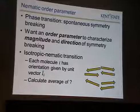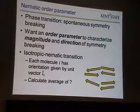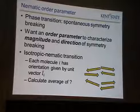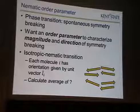In the case of a magnetic phase transition, you have an order parameter which is the net magnetization, representing the magnitude and direction of the symmetry breaking. So now we want to construct something analogous to that for nematic liquid crystals. What kind of order parameter would represent the magnitude and direction of the symmetry breaking here?